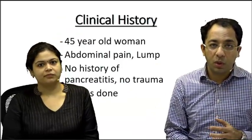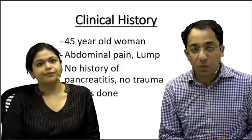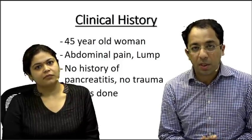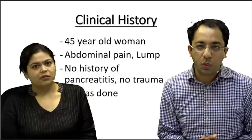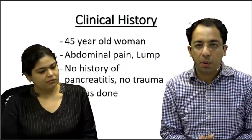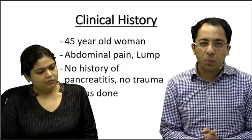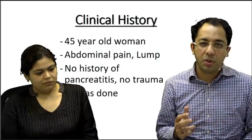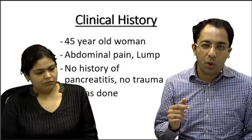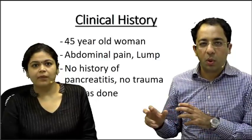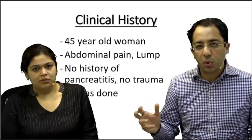I will start with the history of the patient. You have a 45-year-old woman who has abdominal pain and a lump. There is a negative history given — no pancreatitis, no trauma — and a CT abdomen was done. If you are a good student, when you look at a history like this, you can already suspect that the examiner is hinting at a pancreatic lesion.